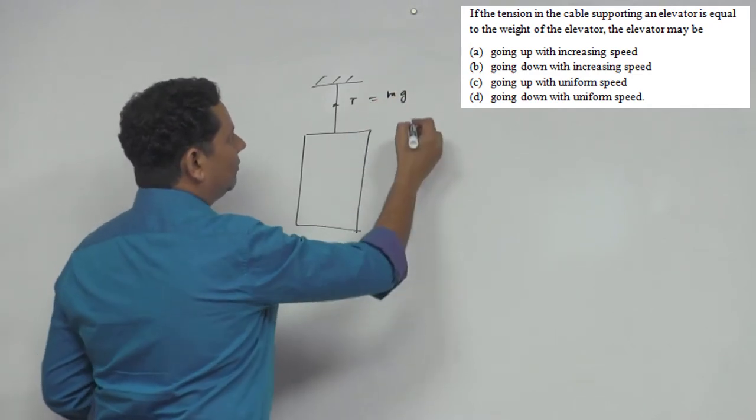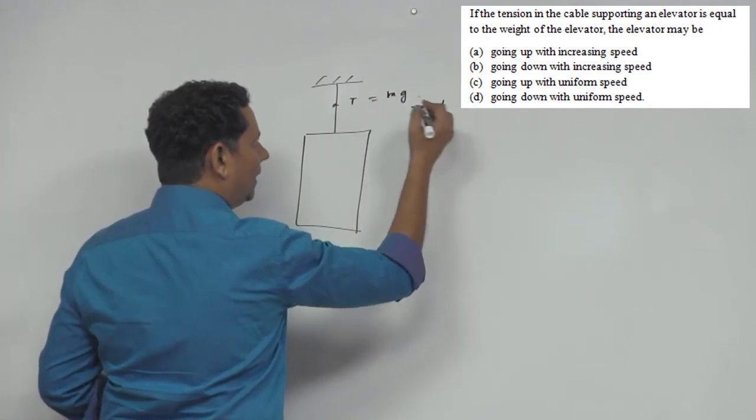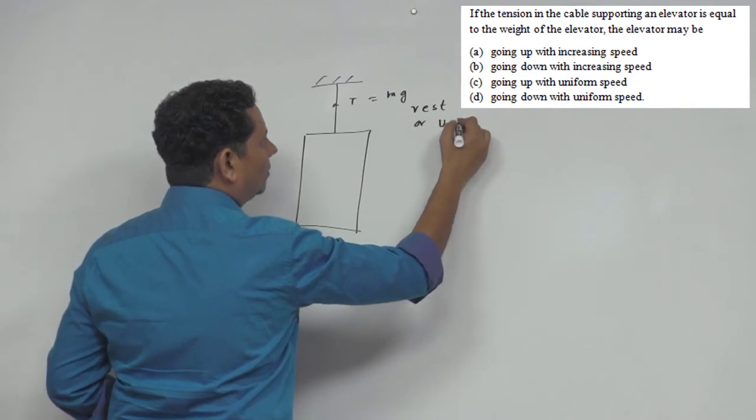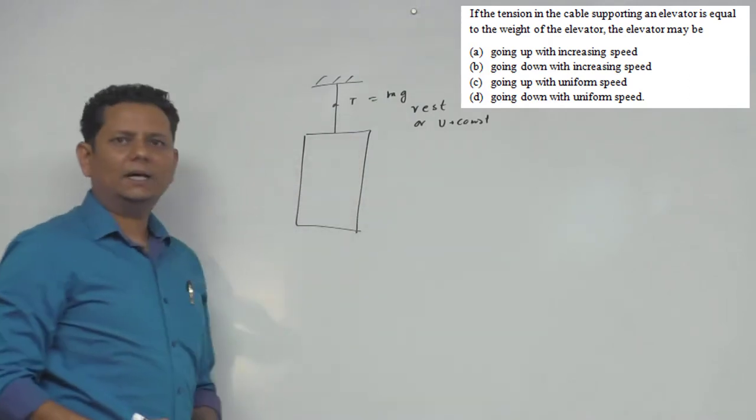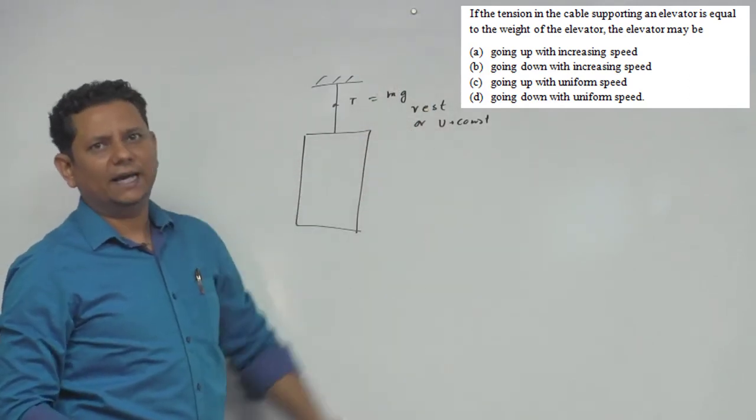will be equal to mg, only in that scenario when it is either at rest, or the velocity is constant. So in both these scenarios, tension will be mg, otherwise it will be mg plus or mg minus.